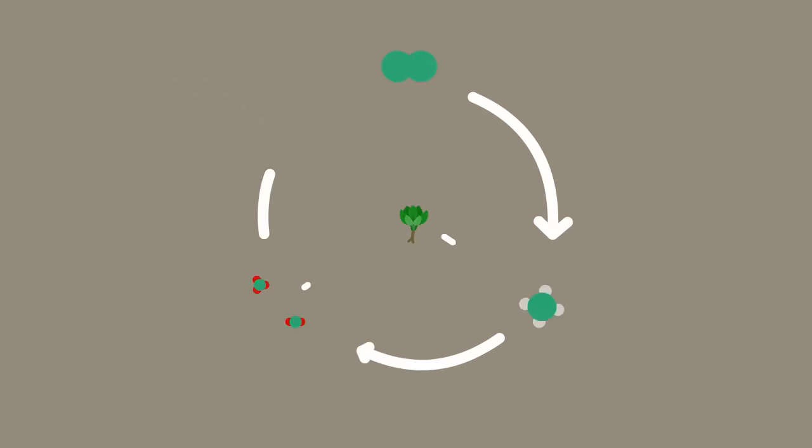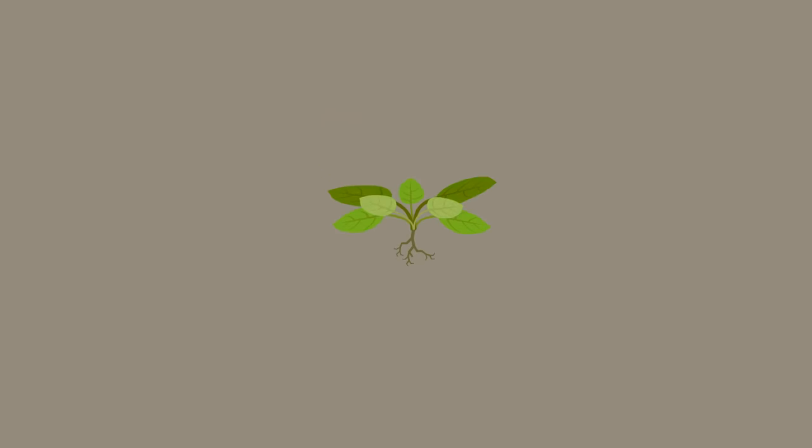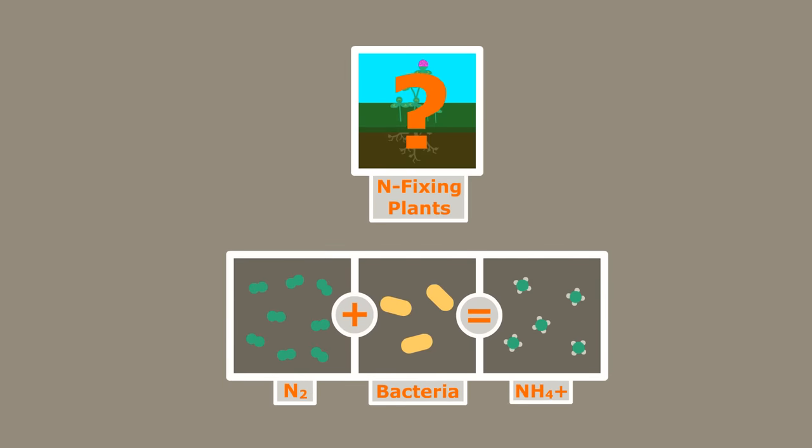Okay, so we know that the nitrogen cycle depends heavily on life in the soil. Without them, the plants would be quite sad. But you may have noticed, if the fixation process is done by bacteria, where do nitrogen-fixing plants fit into this?